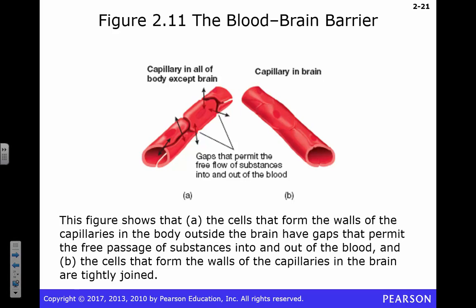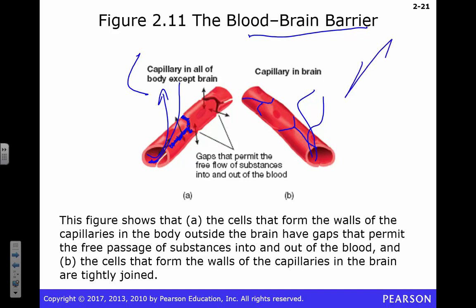Here's the blood-brain barrier. This is basically everywhere else in your body — you've got nice big gaps between cells and stuff can leak out, which is what's supposed to happen. Stuff leaks out, stuff comes in — nutrient interchange with waste, that's normal. In your brain, we're going to seal up those gaps and make sure everything fits together tightly so nothing leaks in or out. How do we get stuff in? Remember those astrocytes.